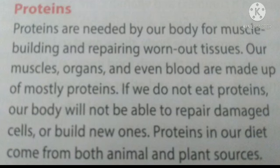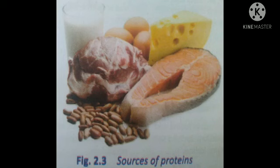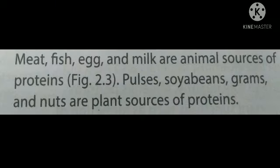The next component of food is protein. Proteins are needed by our body for muscle building and for repairing worn-out tissues. Our muscles, organs and even blood are made up of mostly proteins. If we do not eat proteins, our body will not be able to repair damaged cells or build new ones. Proteins in our diet come from both animal and plant sources. Meat, fish, egg and milk are animal sources of proteins. Pulses, soybeans, grams and nuts are plant sources of proteins.